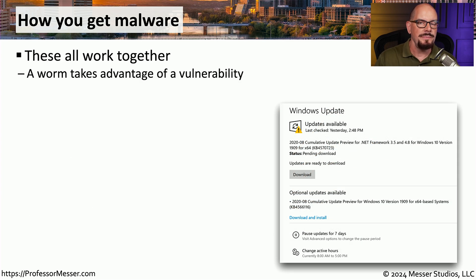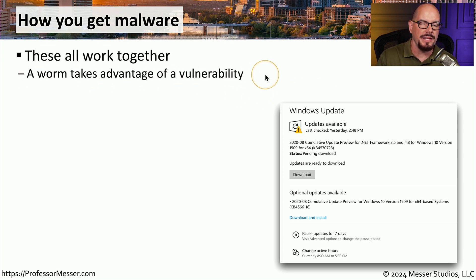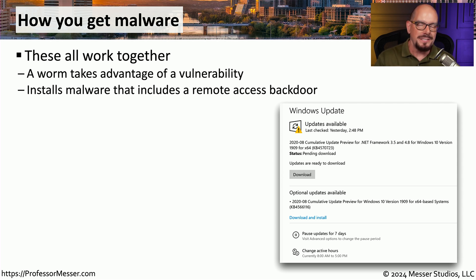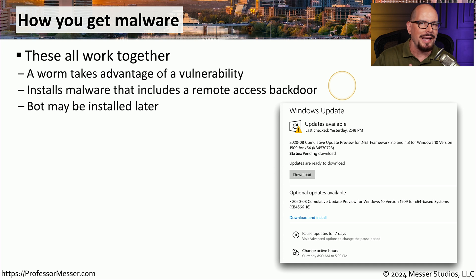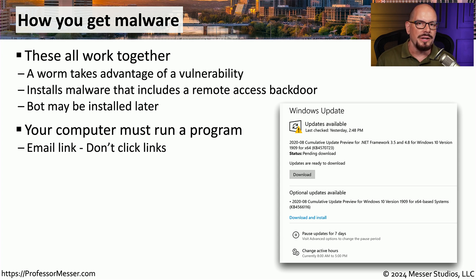Very often multiple types of malware are working together to infect your system. A common scenario is where a worm might take advantage of a vulnerability on your system because you did not update to the latest security patches. Once that worm finds its way onto your system, it then embeds malware in the form of a remote access backdoor, which allows the malware author to gain access to your system. Often they will also install a bot, enabling them to view and control your computer remotely. For any of this to work, there has to be some executable that runs on your system.